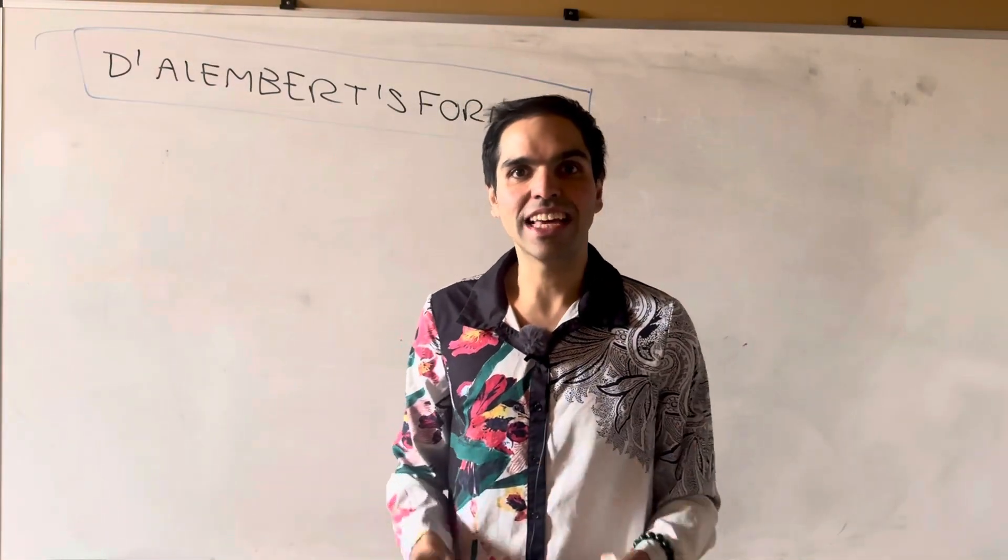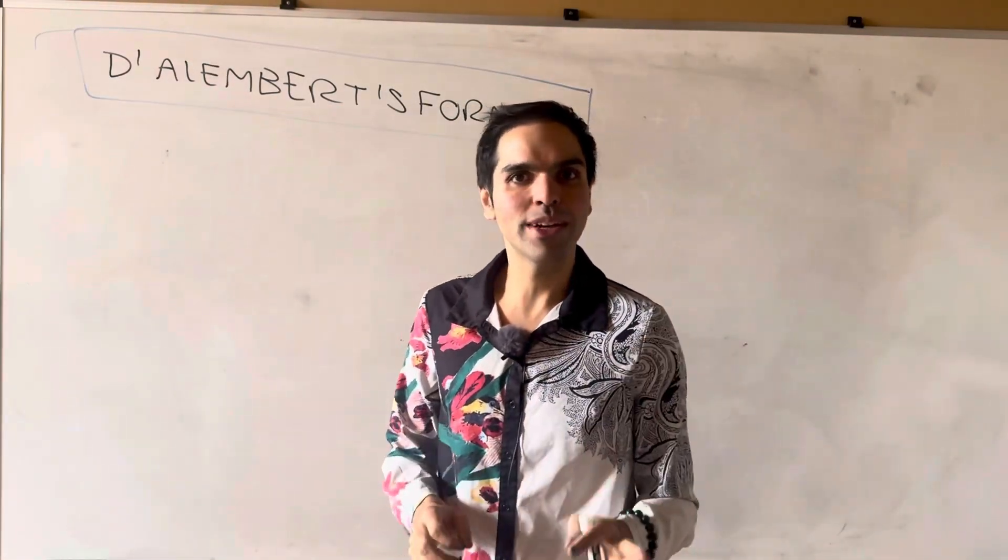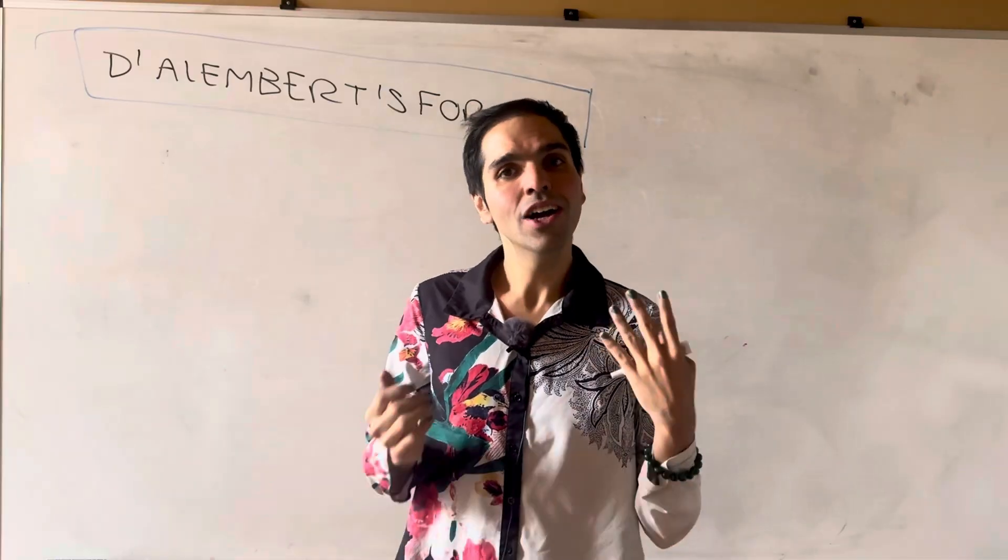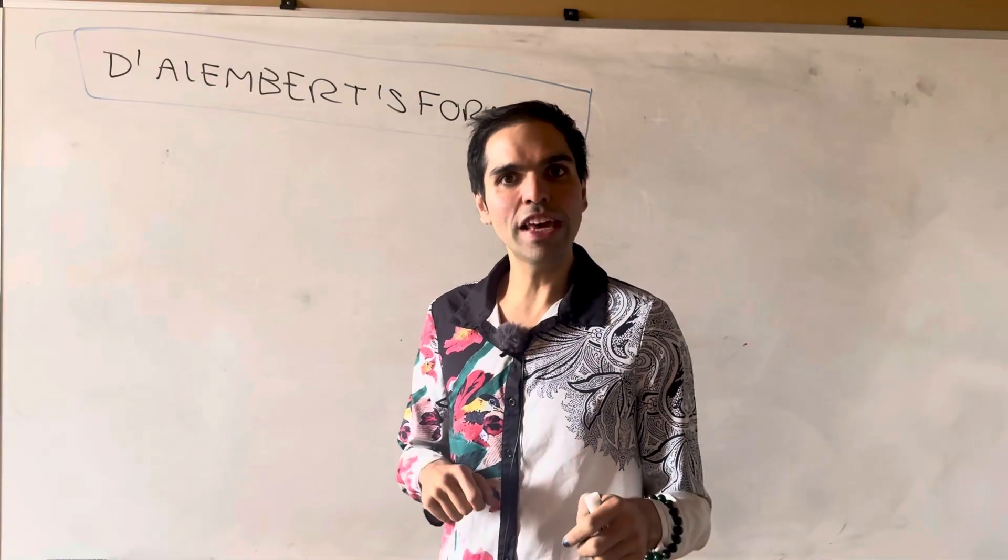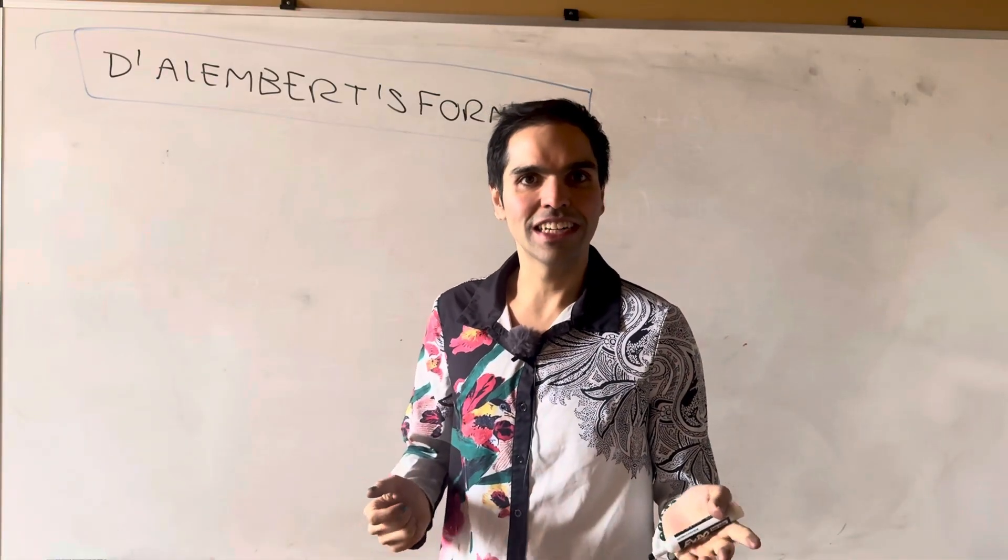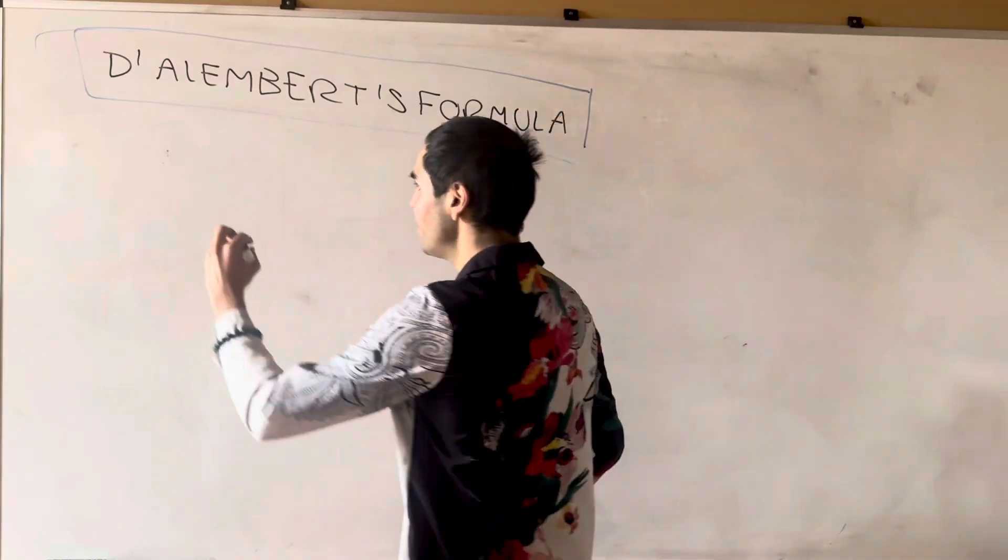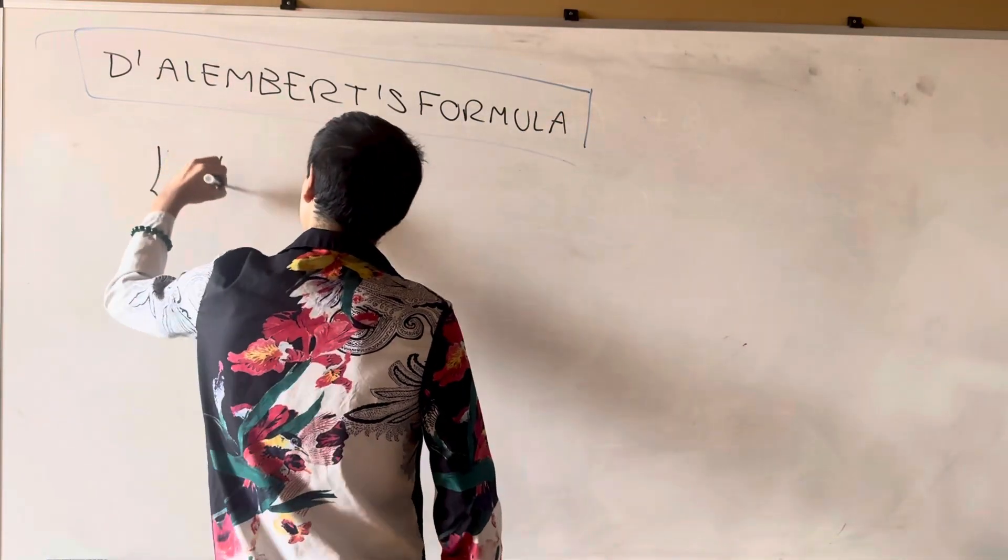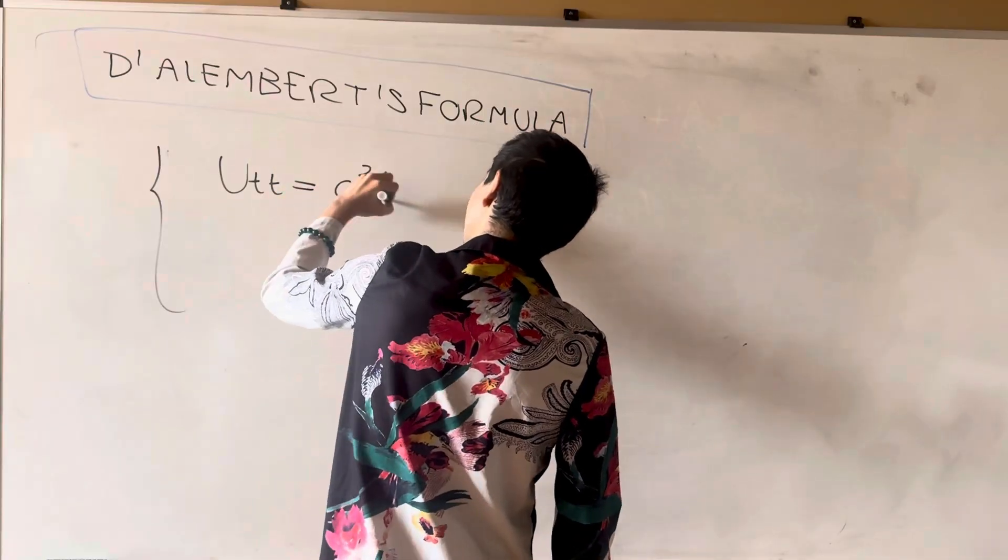Thanks for watching, and today we will derive the celebrated d'Alembert's formula, which gives us the solution of the wave equation with initial conditions. Now let's consider the wave equation, u_tt equals c squared u_xx.